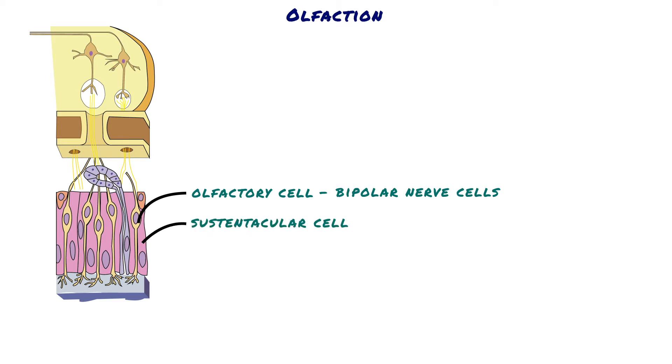The mucosal end of the olfactory cell forms a knob from which 4 to 25 olfactory hairs project into the mucus that coats the inner surface of the nasal cavity. These projecting olfactory cilia form a dense mat in the mucus, and it is these cilia that react to odors in the air and stimulate the olfactory cells.